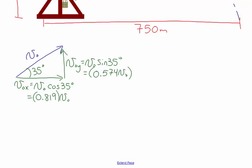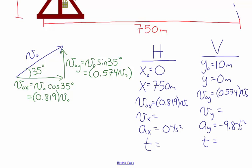Because we're looking at two-dimensional motion, we set up columns for horizontal and vertical motion listing all kinematic quantities. Horizontally: starting position 0 meters, ending position 750 meters, initial x-velocity is 0.819·v0, horizontal acceleration is 0 m/s². Vertically: starting height 10 meters, ending height 0 meters, initial y-velocity is 0.574·v0, vertical acceleration is −9.8 m/s².